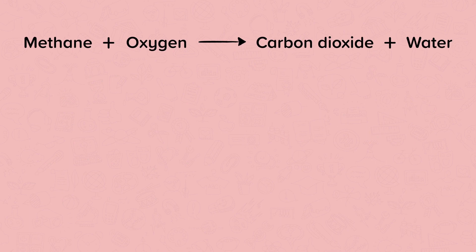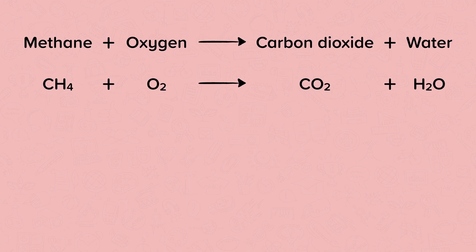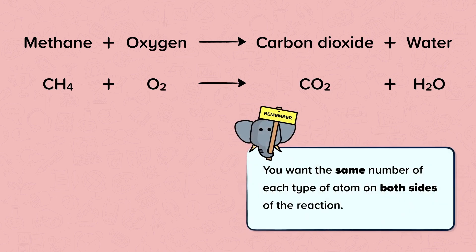The simple equation for this reaction is CH4 plus O2 gives CO2 plus H2O. Remember, you want the same numbers of each atom type on each side of an equation. At the moment, this simple equation is unbalanced. Now there are the same number of carbons, hydrogens, and oxygens on both sides of the equation. We call this balanced.